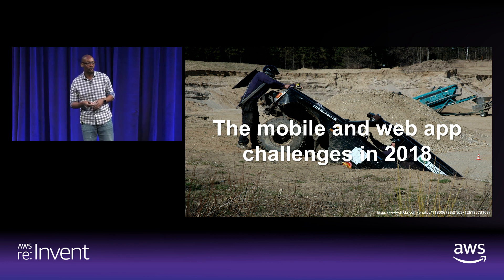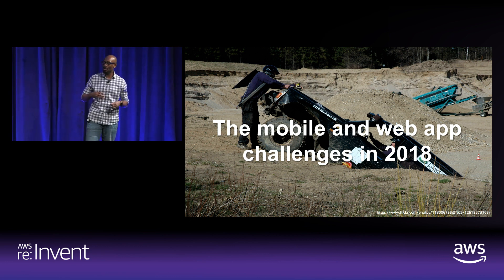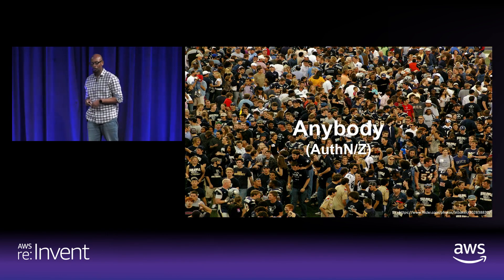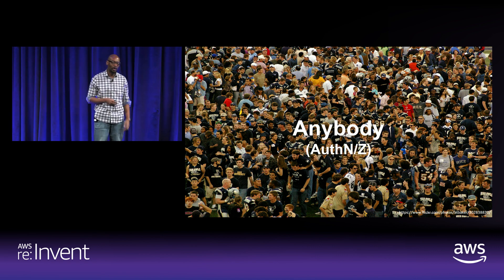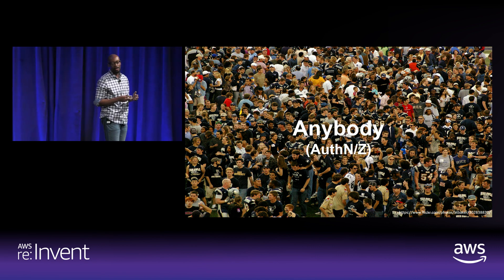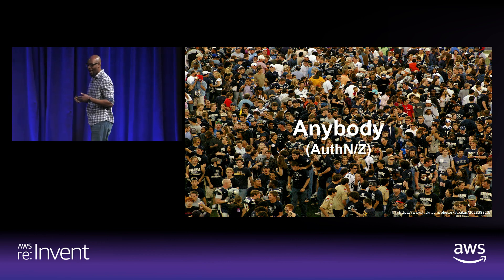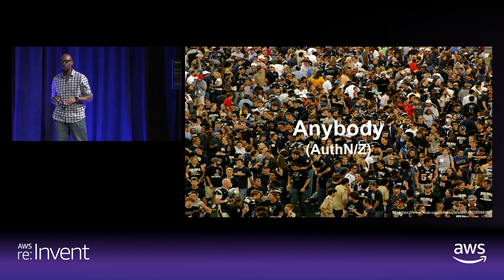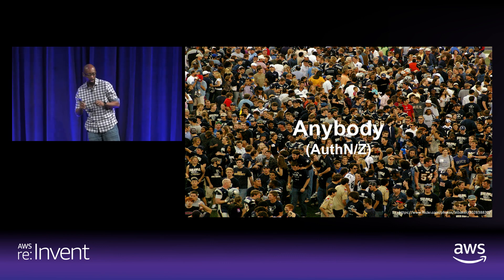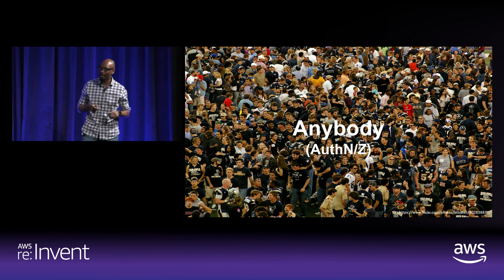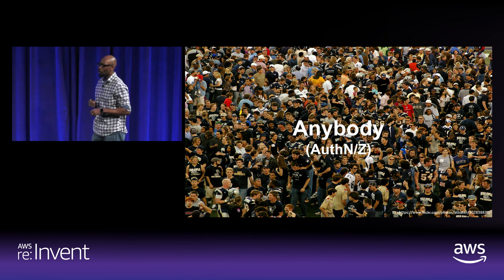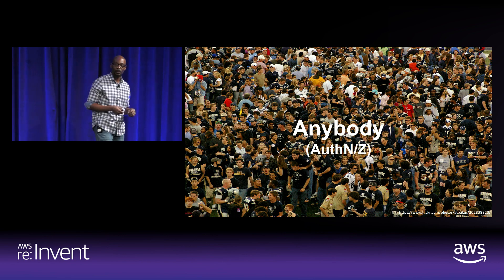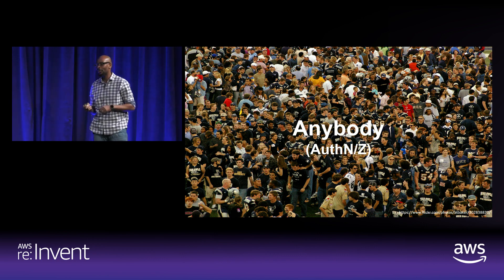So talking about the challenges that developers face — today's applications should be built for anybody and for everyone. Applications should be able to recognize users via authentication and grant those users access to specific resources based on authorization. Authentication and authorization are the first things that your users interact with on your application — think about users signing in, signing up, or granting access to the right APIs. Getting it right is important, but getting it right means having a specific understanding of security protocols, security best practices, and user management. This is a skill set that most front-end developers do not have.